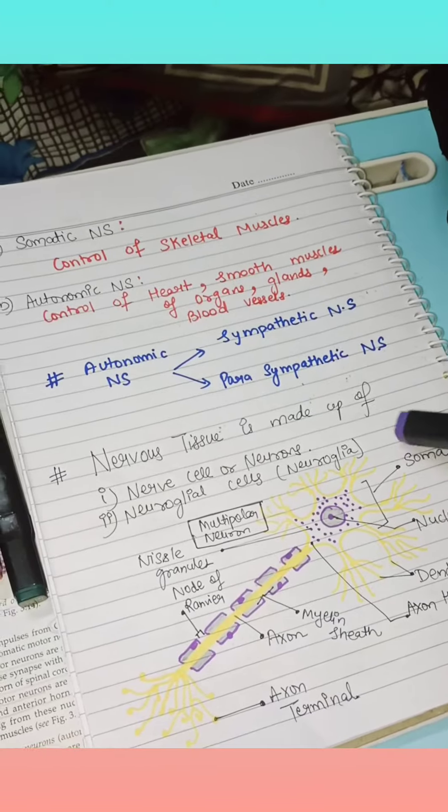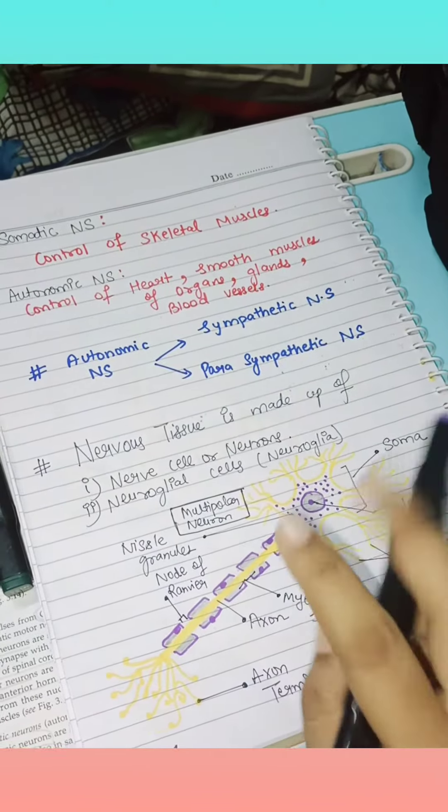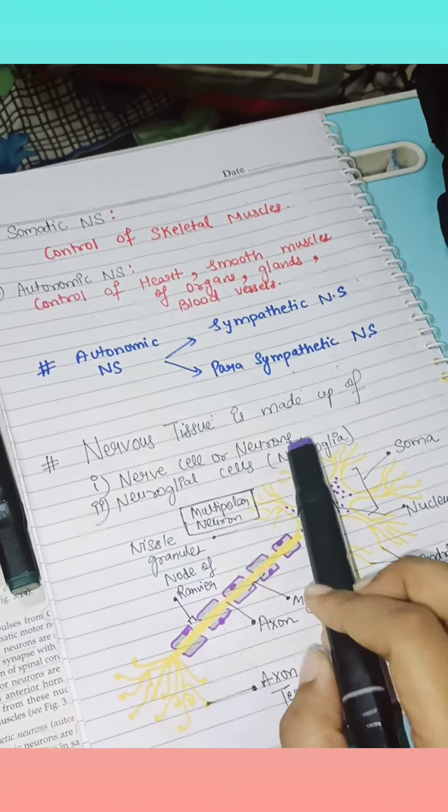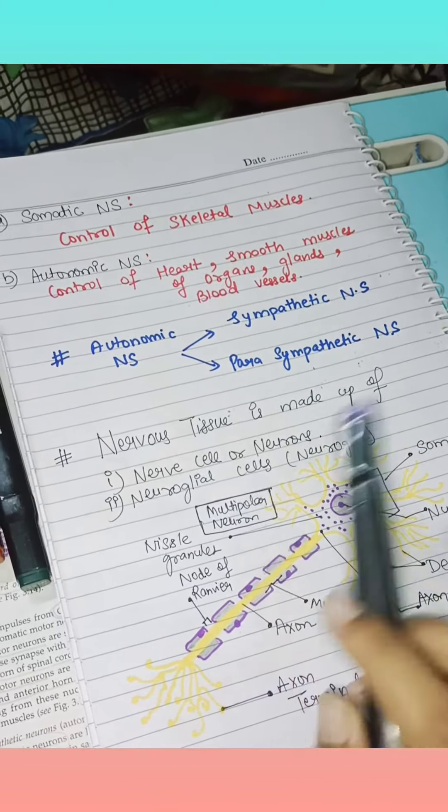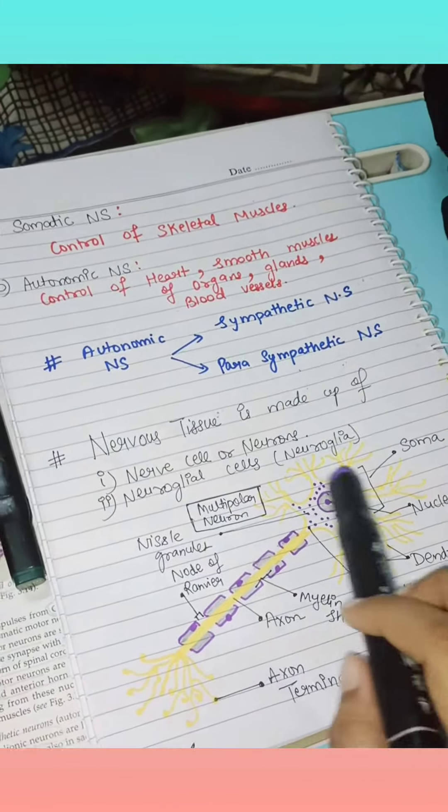We will study the nervous tissue. It is made up of two types: nerve cells (neurons) or neuroglia cells. This is the structure of the nerve cell.